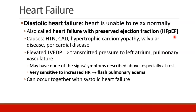Diastolic failure can be caused by hypertension, coronary disease, hypertrophic cardiomyopathy, valvular disease, and pericardial disease. In these patients, the left ventricular end-diastolic pressure is elevated because the heart can't relax enough to accommodate all of the venous return coming into it. These elevated pressures get transmitted to the left atrium and then to the pulmonary vasculature.